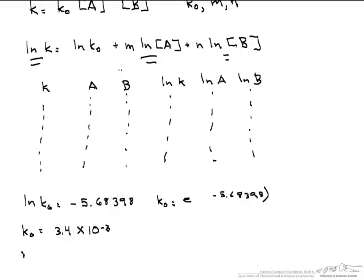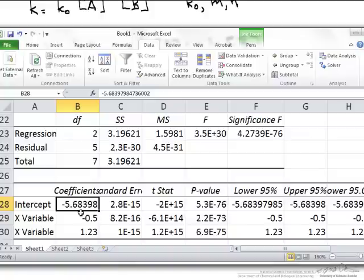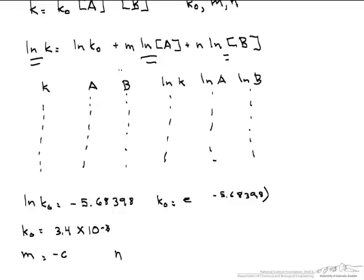Now, we need our m and our n. So again, we go back to our Excel spreadsheet. Our m is this negative 0.5, so let's put that in. And our n is this 1.23.